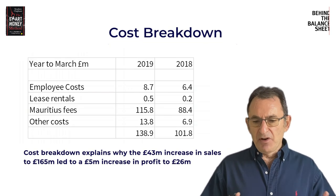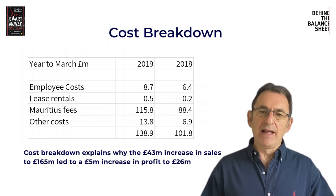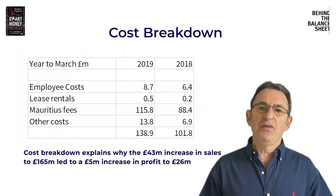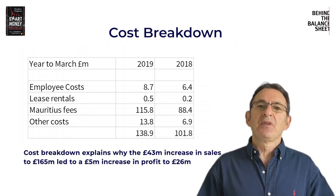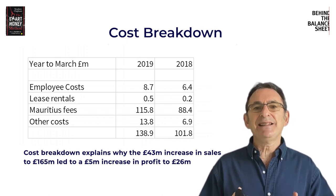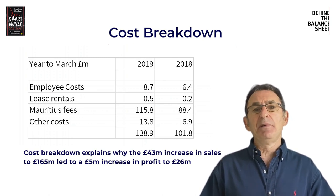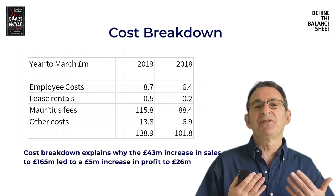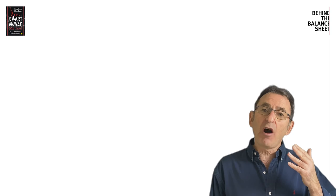You can see that the fees to the Mauritius entity are by far the largest component of the cost base. And this explains why that 43 million increase in sales led to only a 5 million increase in profit — only 26 million. Because Terry — I presume it's Terry — is behind this related party, and he's collecting his income. Instead of taking it as a partner in the LLP in the UK, where he'd be subject to 40% tax and national insurance, he's taking it in Mauritius, where the top rate of tax I believe is 15%. And good luck to him. But if you hadn't looked at that related party note, you could have got quite a false impression.